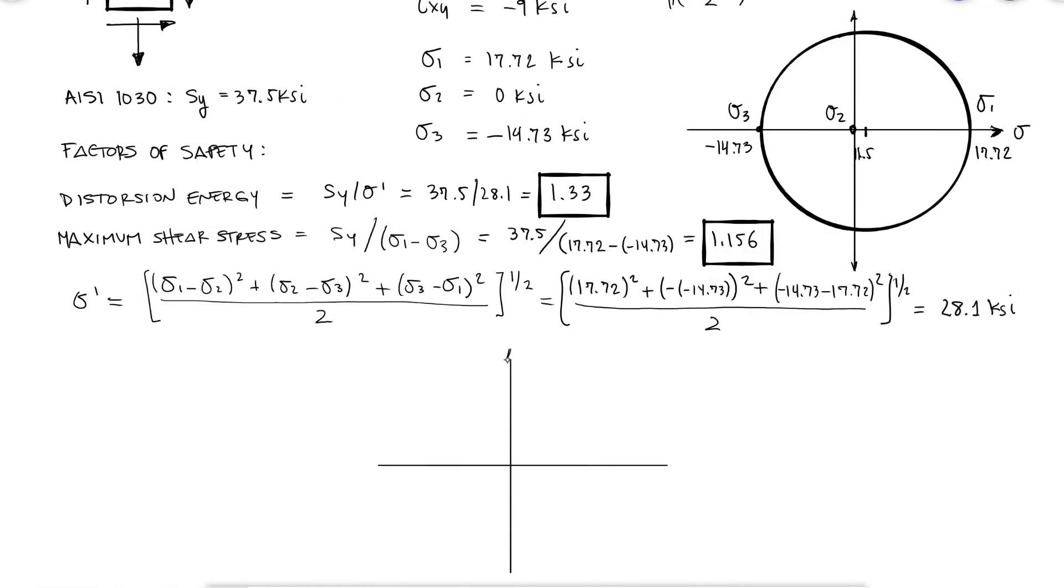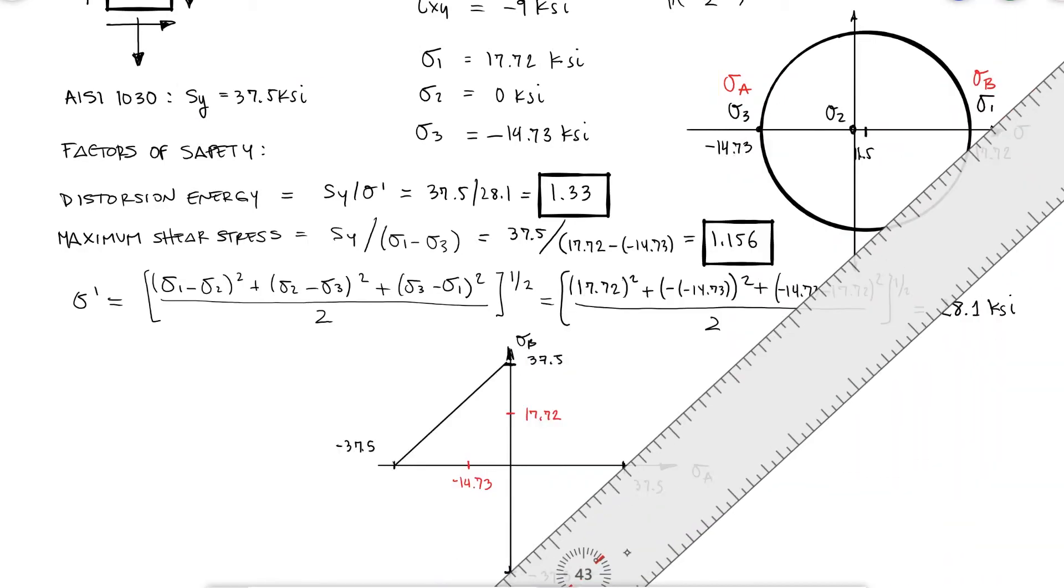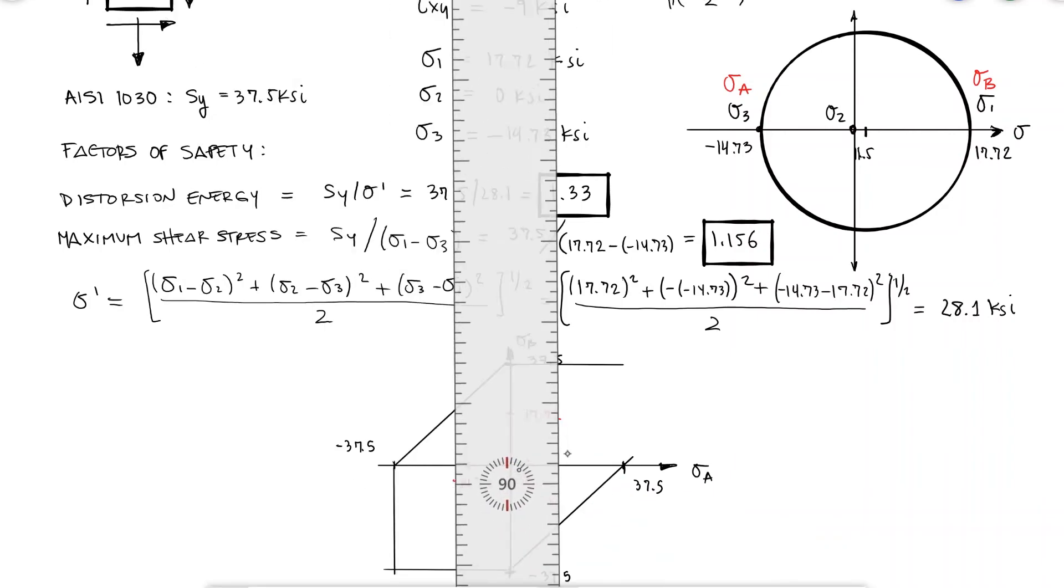but let's take a look at the stress envelope to understand what we just did. The stress envelope for the maximum shearing stress criteria, or TRESCA, has a straight line of slope 1 for quadrants 2 and 4.